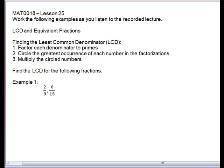We're going to look at another way to find the least common denominator when we have larger numbers, and this is called the prime method. So our steps are: we're going to factor each denominator to primes, we're going to circle the greatest occurrence of each number in the factorizations, and then we will multiply the circled numbers. That will give us the least common denominator.